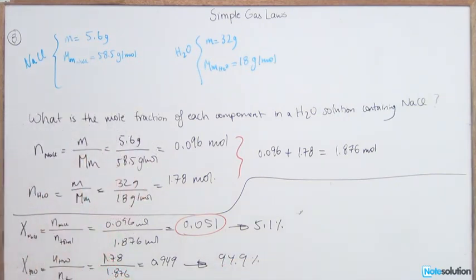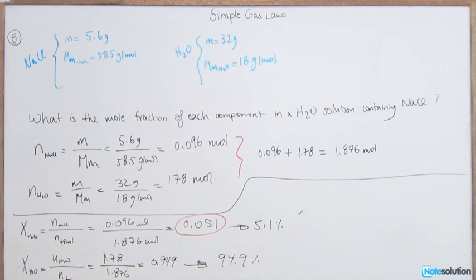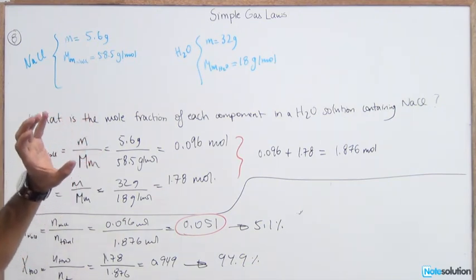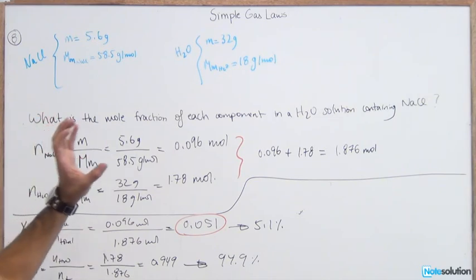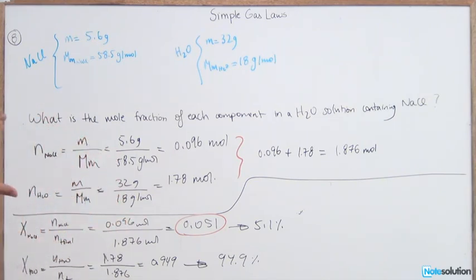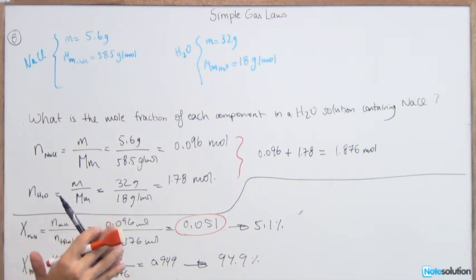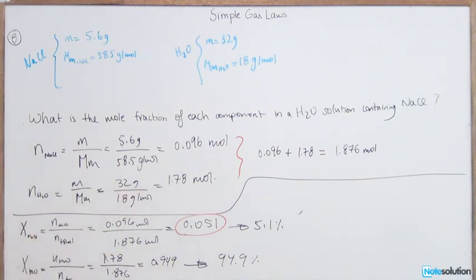And there you go — this is how you do mole fractions. When talking about Dalton's law, you'll most likely be dealing with pressure or number of moles. It's the same principle, but you use the ideal gas equation to find the pressure of each compound separately — for example, carbon dioxide and oxygen — then add the pressures together and calculate the mole fraction for each.